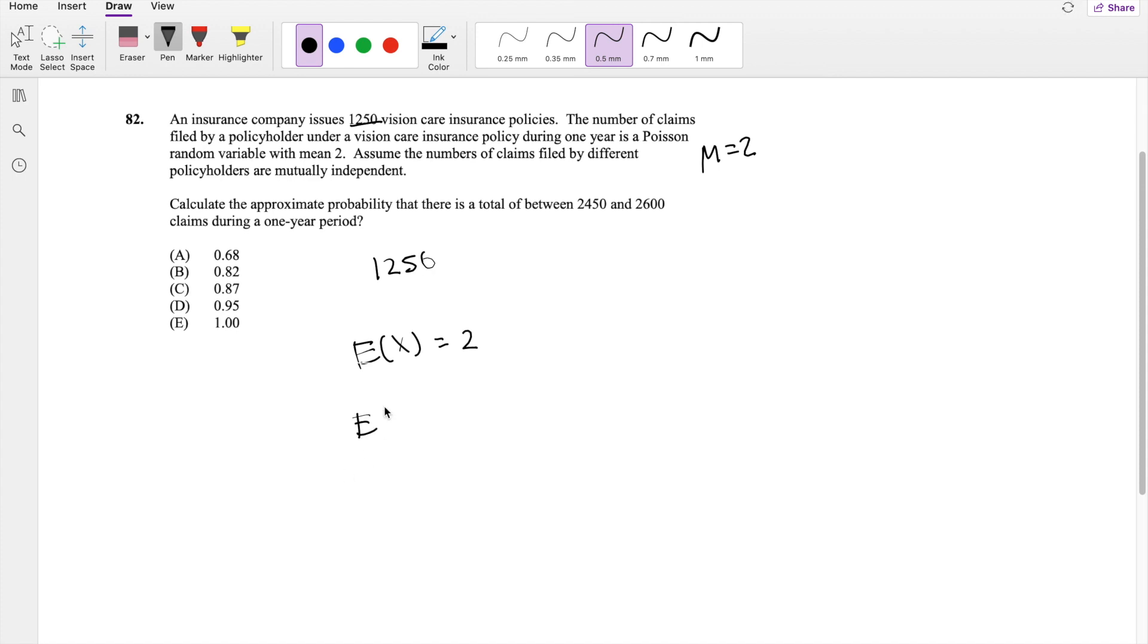But then we're looking for x star, where x star is ensuring 1250 of these claims. So this is equal to 2 times 1250, which is equal to 2500.